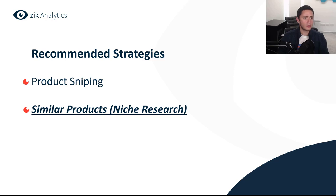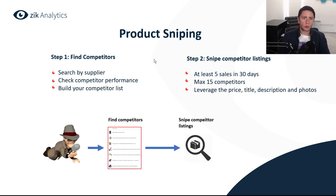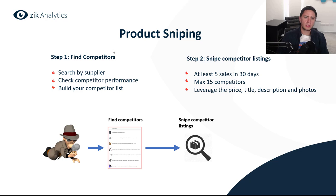Let's go to the next step where I explain each method in detail and give you a short explanation while sharing my screen. Product sniping breaks down into two main steps. Step number one is finding competitors — exactly like this guy here in the picture — you're going and searching for competitors that you can actually find products to snipe.